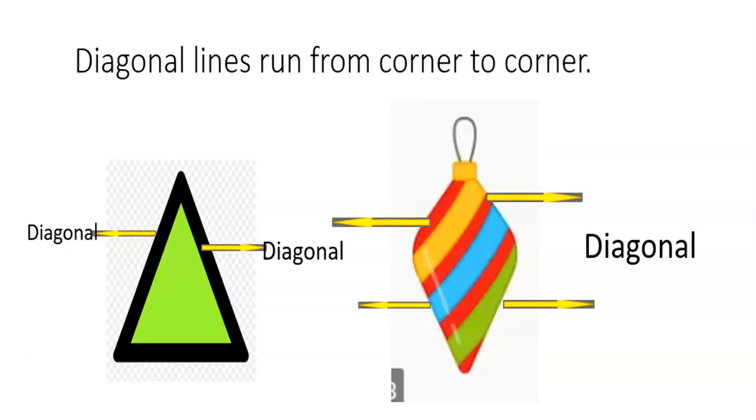Diagonal lines run from corner to corner, just like the sides of a triangle, or the striped lines here on this pendant jewel. Can you also think of diagonal lines examples?